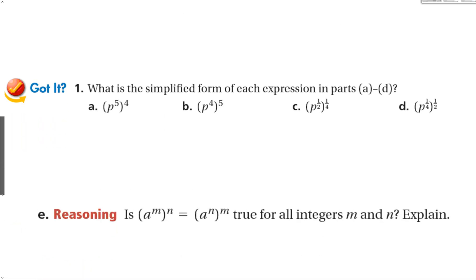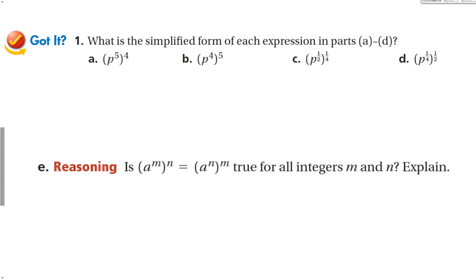Let's try some guided problems. For power to a power, we multiply the exponents together. So p to the 5th to the 4th becomes p to the 20th (5 times 4), and p to the 4th to the 5th is also p to the 20th (4 times 5). With fractions: p to the 1-half to the 1-quarter becomes p to the 1-eighth. Is a to the m times n equal to a to the n times m for all integers? Yes, because multiplication is commutative.